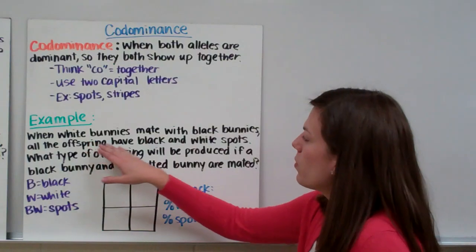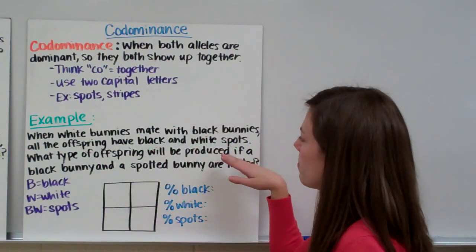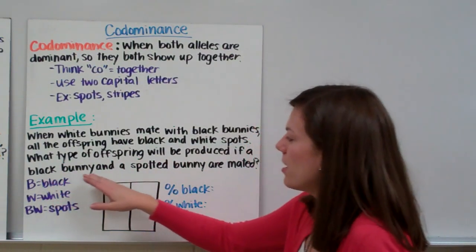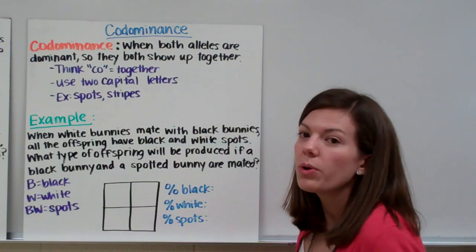Here's an example. When white bunnies mate with black bunnies, all the offspring have black and white spots. What type of offspring will be produced if a black bunny and a spotted bunny are mated?